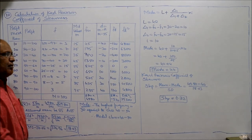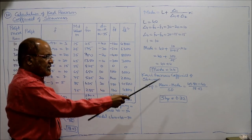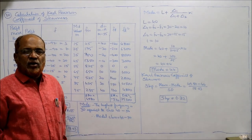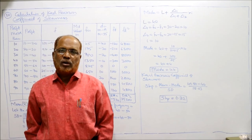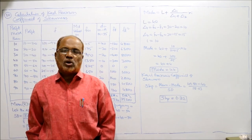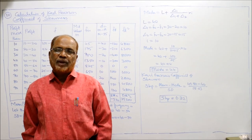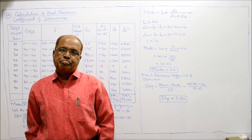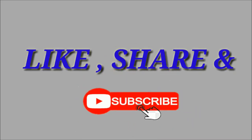SKP = (Mean − Mode)/SD = (49.8 − 44)/18.03 = 0.32. This is the end of all problems on Karl Pearson's coefficient of skewness. The next topic, problem 11, will cover Bowley's coefficient of skewness, also called coefficient of skewness based on quartiles, which requires only quartiles and median — not mean, mode, or standard deviation.